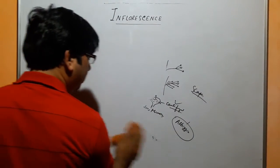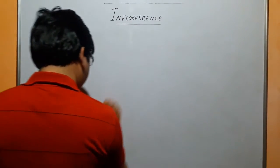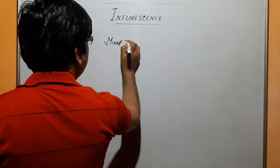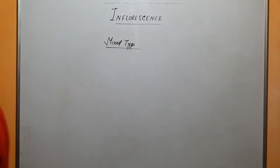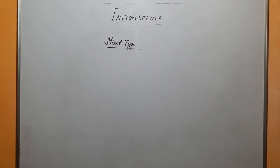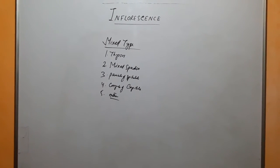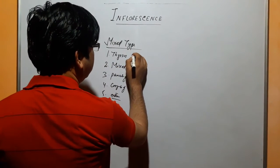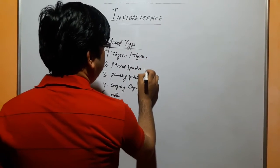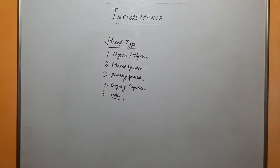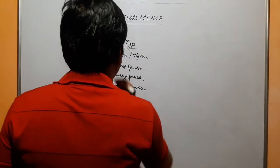Now let's move towards mixed type of inflorescence. In mixed type, there are five types. We can see that the cymose cluster is arranged acropetally. You will see that this is a thyrsus. There is a thyrsus — the cymose cluster is arranged acropetally, so it is cymose but with acropetal arrangement, which is racemose.